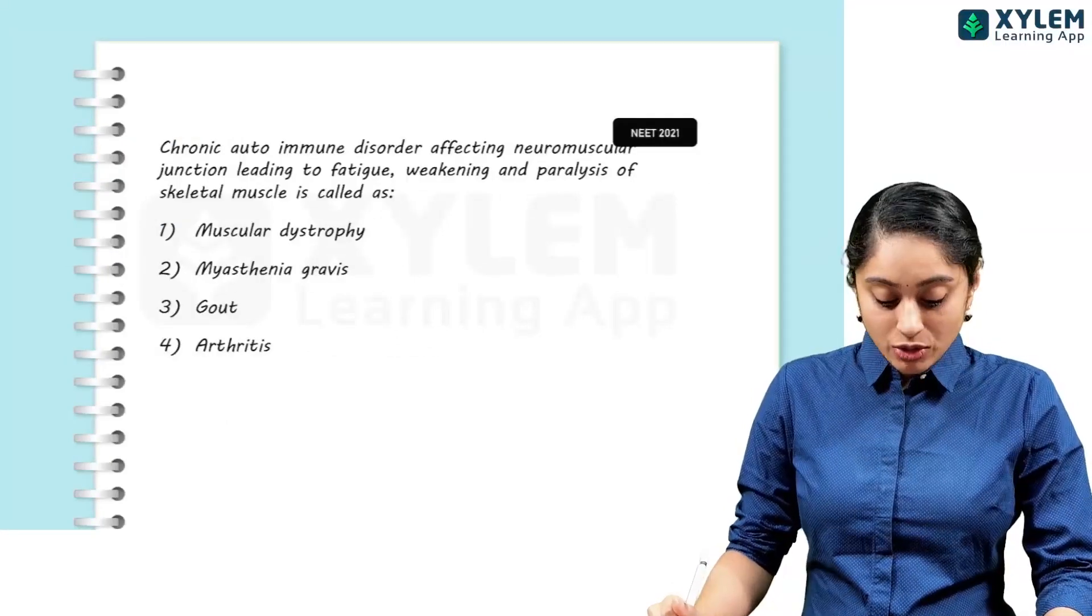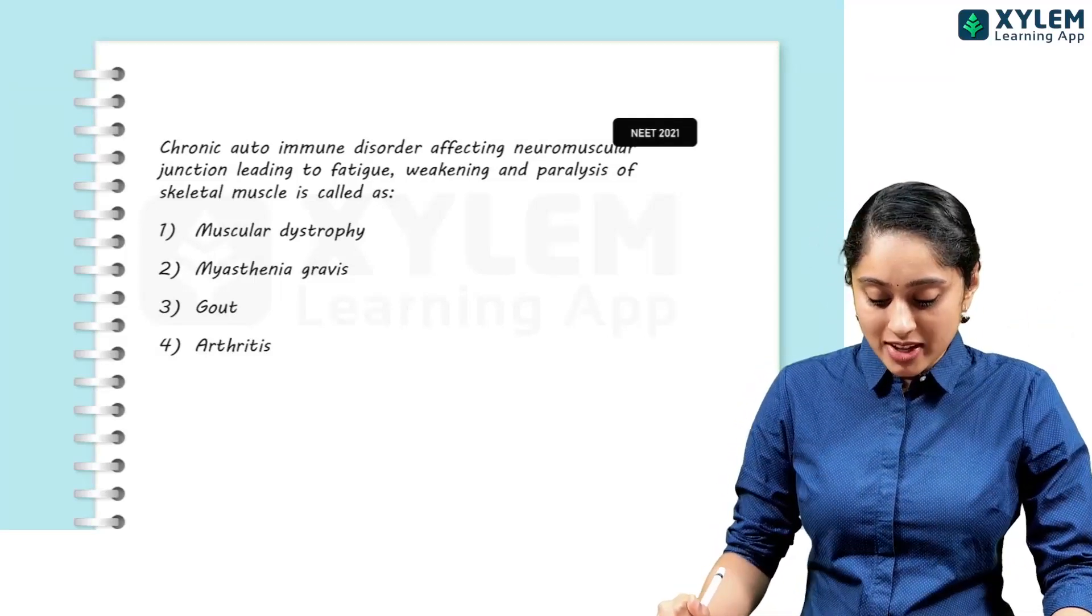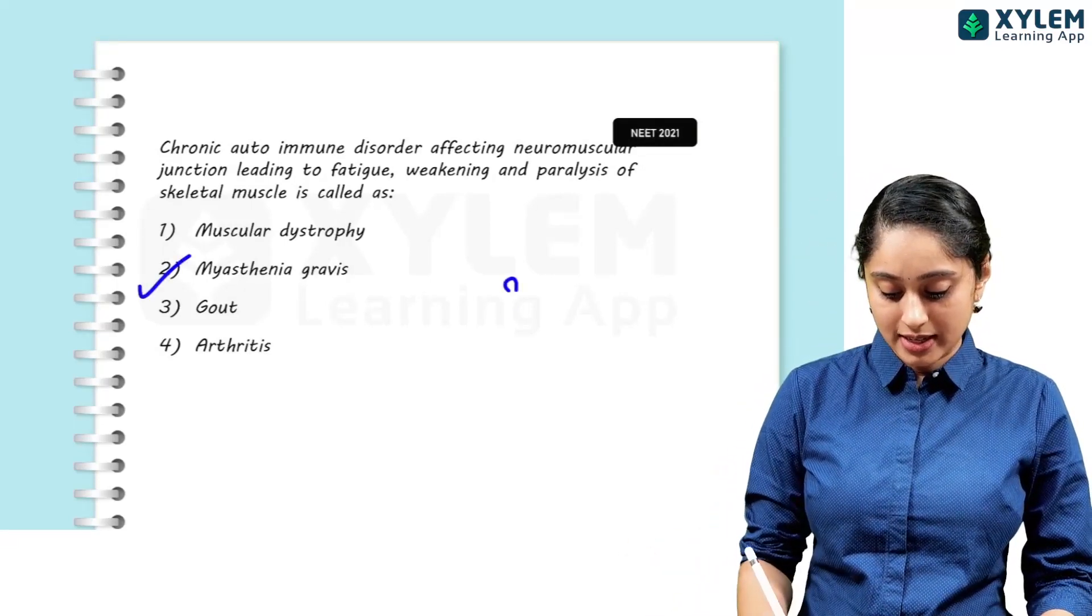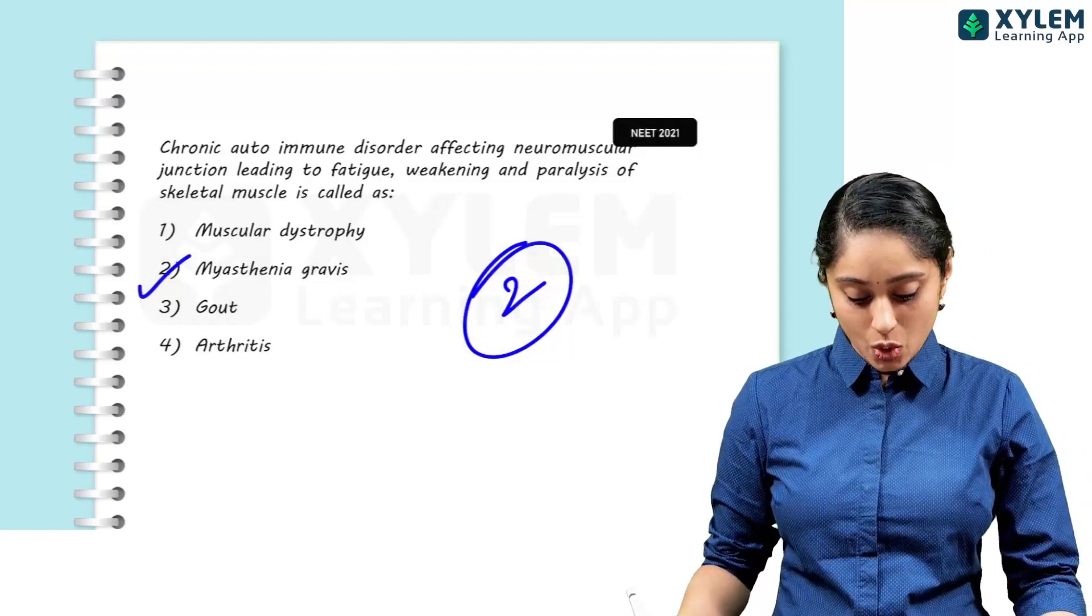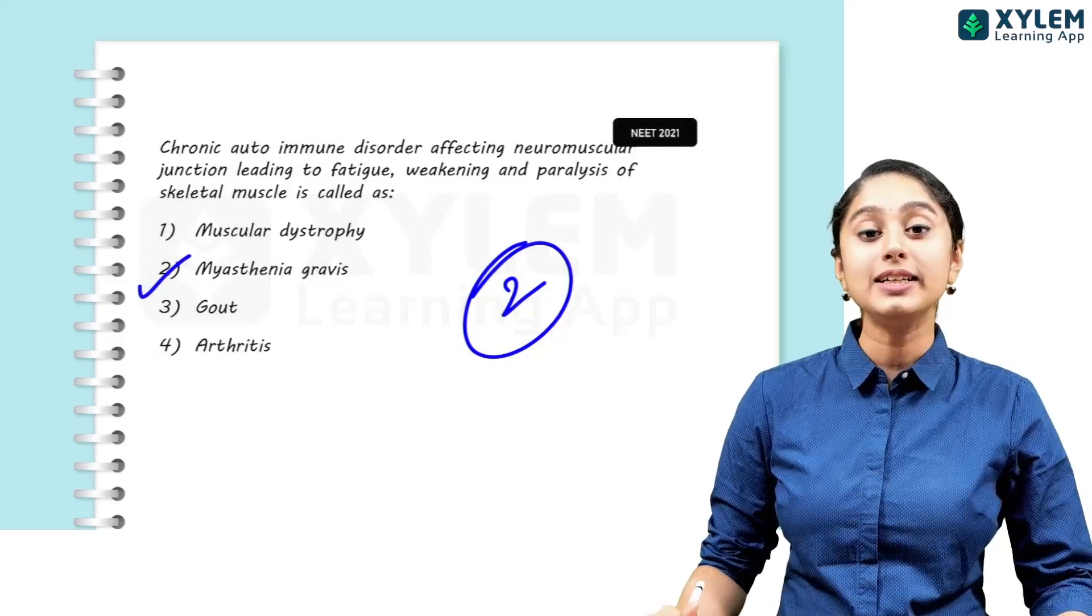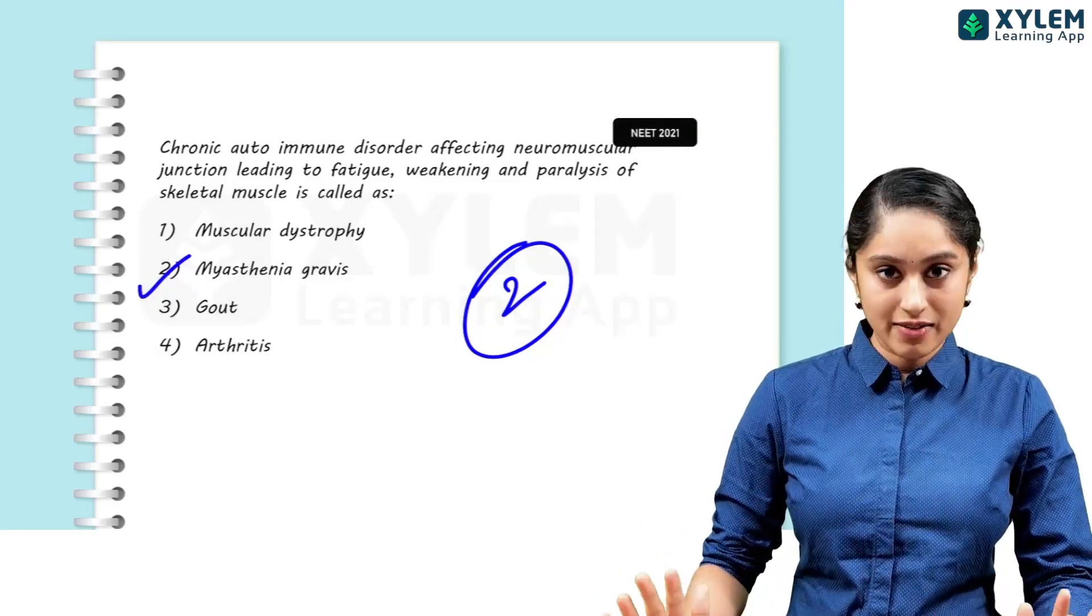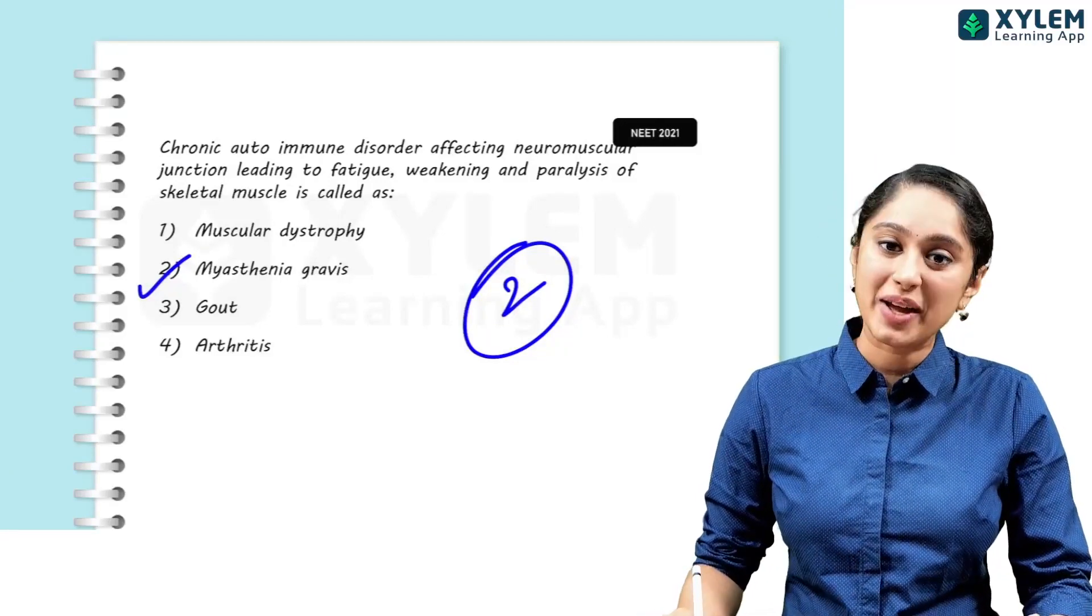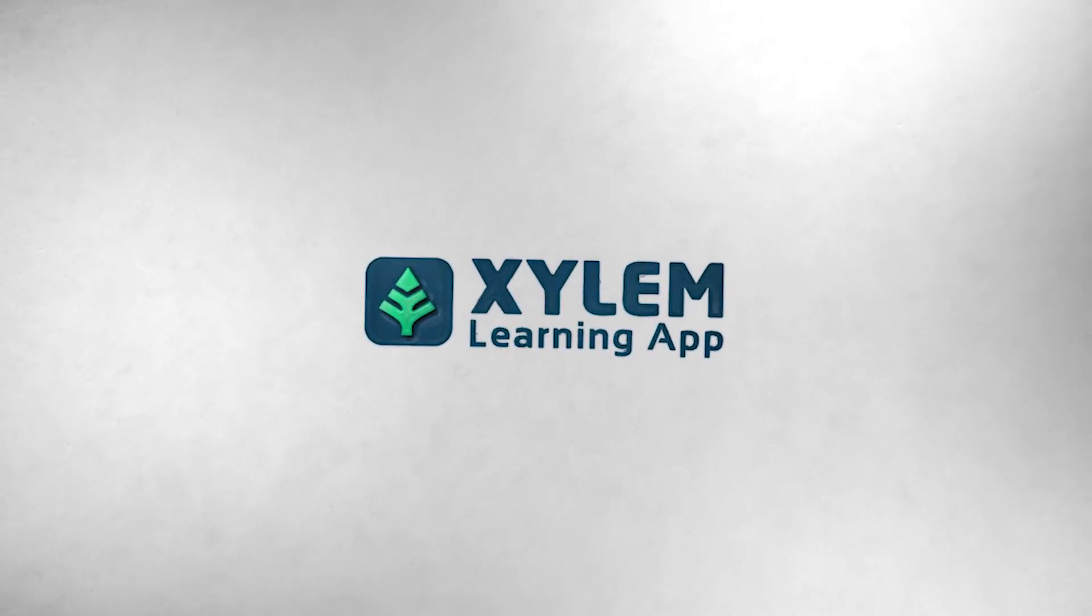This is a question: chronic autoimmune disorder affecting neuromuscular junctions leading to fatigue, weakening, paralysis - everything is nothing but myasthenia gravis. Muscular dystrophy is a genetic disorder, arthritis is inflammation of joints and gout is the accumulation of uric acid crystals. So option 2, myasthenia gravis will be the right answer. In this chapter, when you go through, there are very simple, direct questions you will find, not very over-twisted, not very hard. So prepare, practice, all the very best, see you.